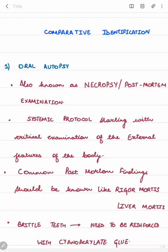The comparative identification procedure includes four steps: first, oral autopsy; second, obtaining dental records; third, comparing ante-mortem and post-mortem dental data; and fourth, writing a report and drawing conclusions. The first step — oral autopsy — is also known as necropsy or post-mortem examination.